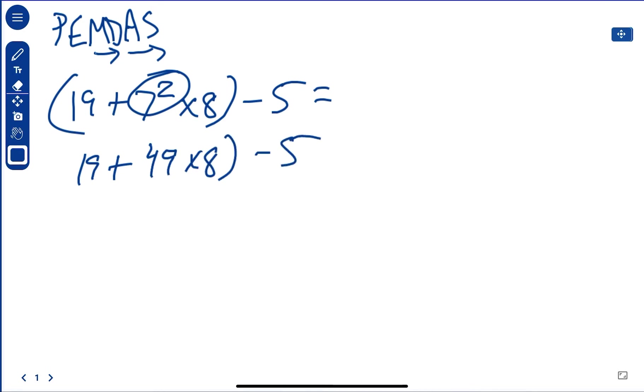19 plus 7 squared is 49 times 8, minus 5. Now, exponents are done. Now we have to do the multiplication first. So we're going to say 49 times 8, and that's going to be 392.